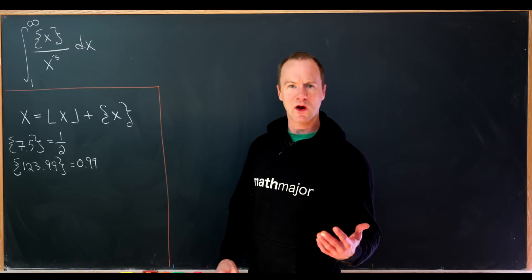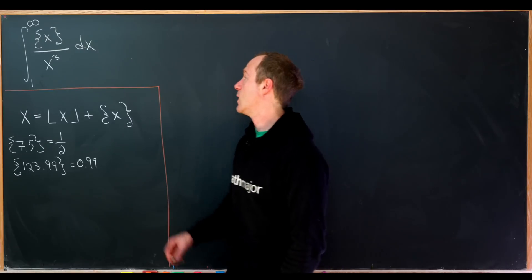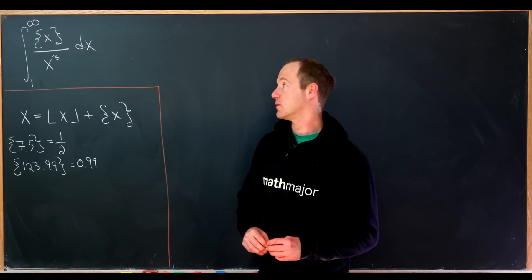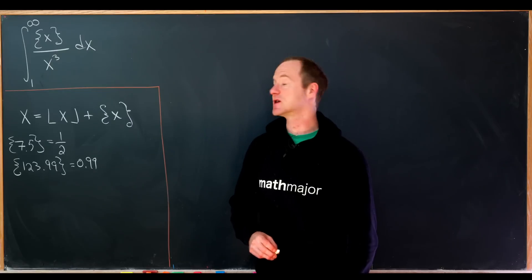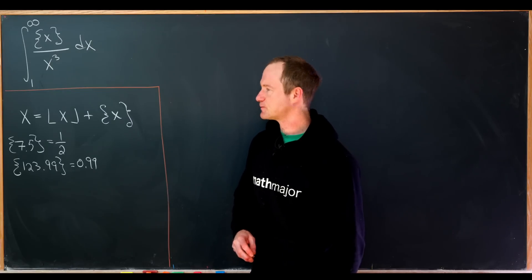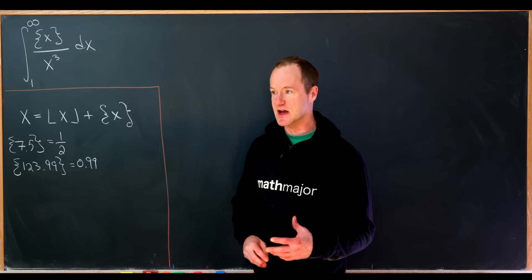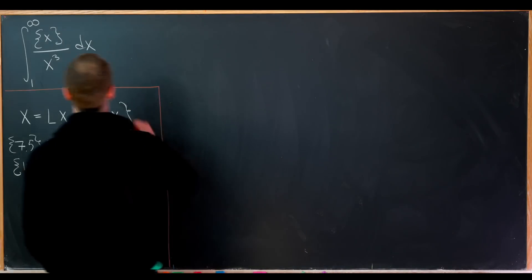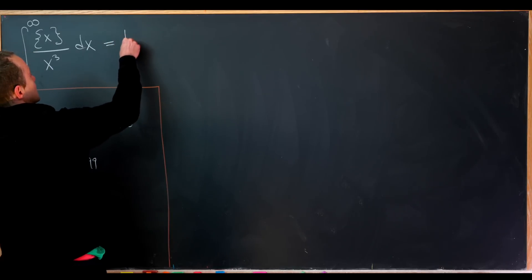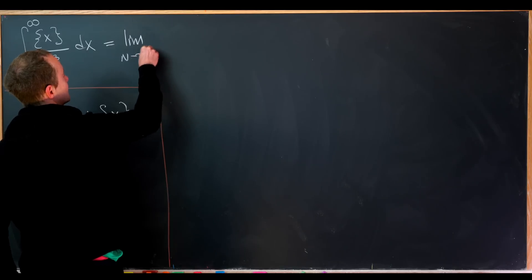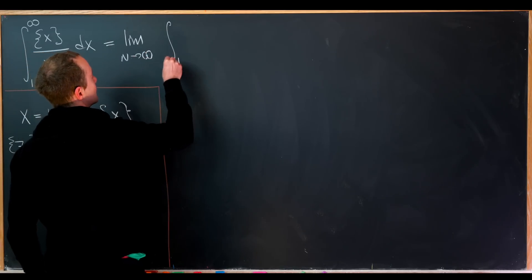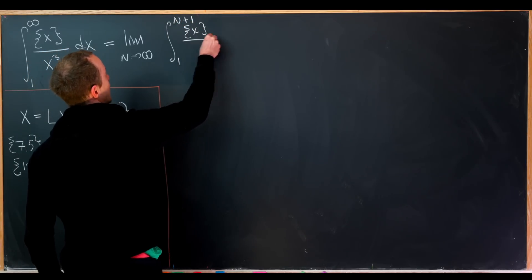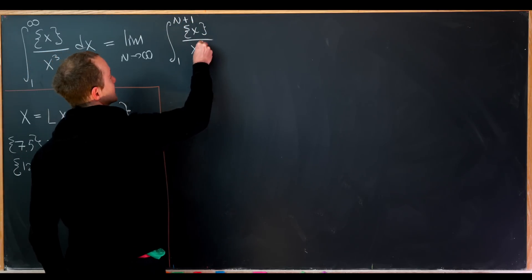So what do we want to calculate today? We'll calculate the integral from 1 to infinity of the fractional part of X over X cubed. The first thing I'll do is take this improper integral and write it as a limit — specifically, the limit as capital N goes to infinity of the integral from 1 to N+1 of the fractional part of X over X cubed DX.